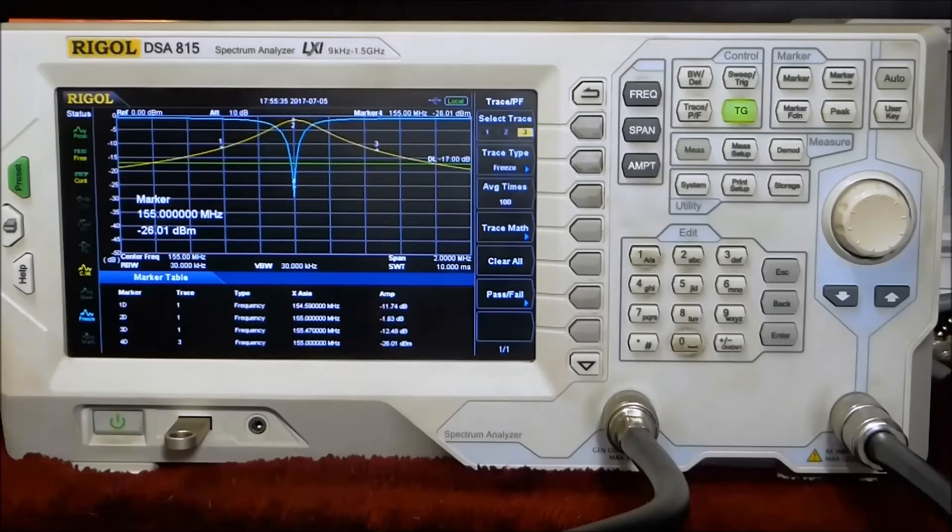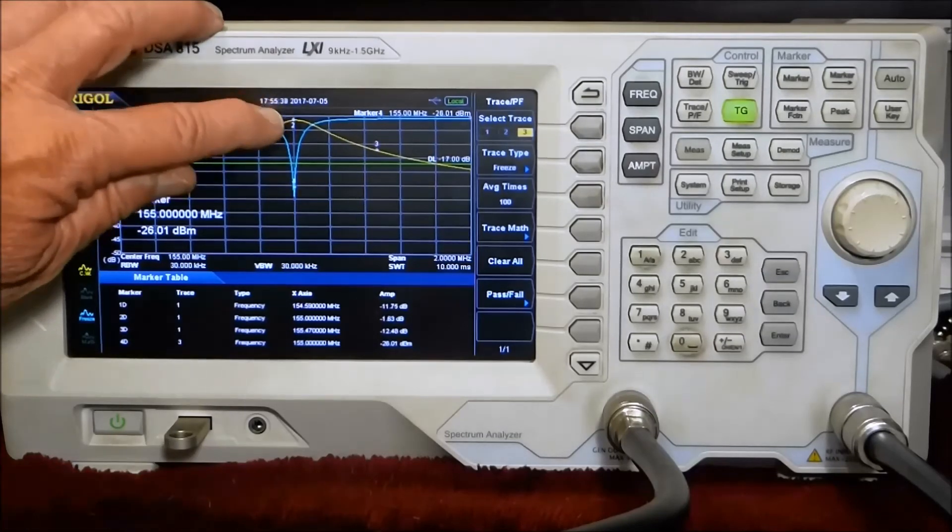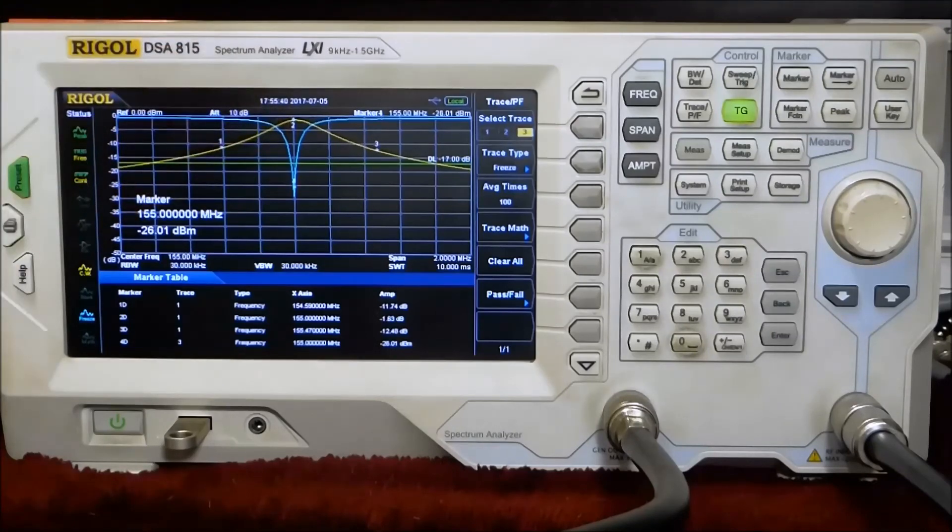So it's about 26 dB down from the level we have near the peak here. The peak here is a little off center, but that's where everything lines up and it's still good enough. It's minus 1.63 dB at 155 on the peak, the yellow trace. And the blue trace is the return loss, which is minus 26 dB, which is quite fine.